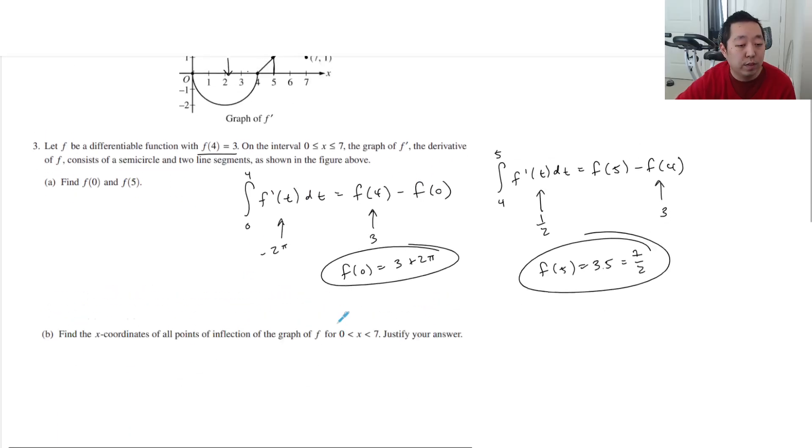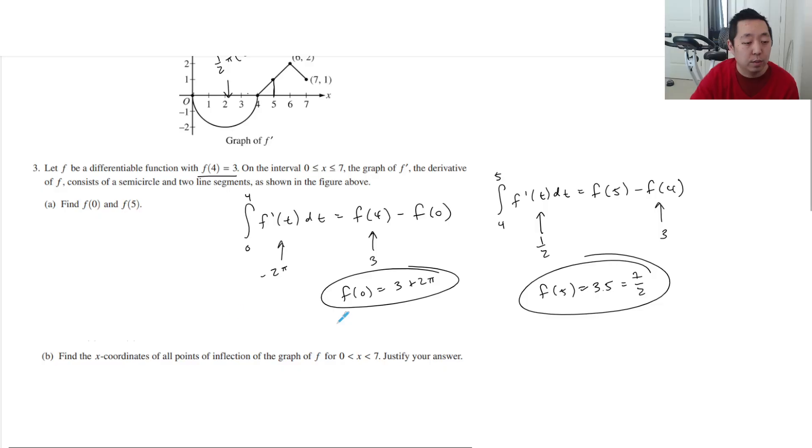Find the x coordinates of all points of inflection of the graph f on 0 to 7. So points of inflection are where the second derivative of x changes signs. Because that's what the point, I always start with the definition. What is the point of inflection? f double prime of x changes signs.